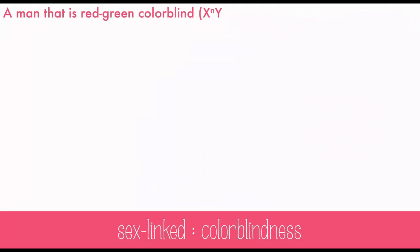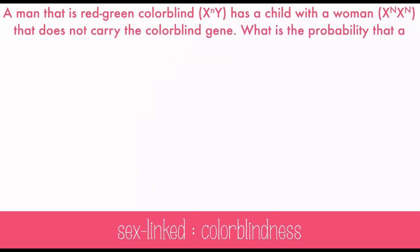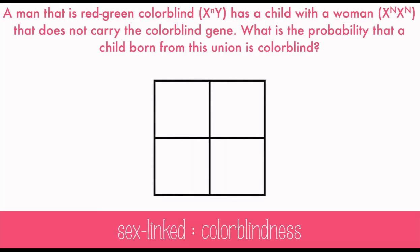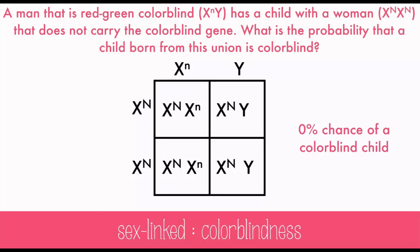A man who is red-green colorblind has a child with a woman who does not carry the colorblind gene. What's the probability that a child born from this union is colorblind? Once we fill out the Punnett Square, we can see there's actually no chance of having any colorblind child, but any girl born would be a carrier.